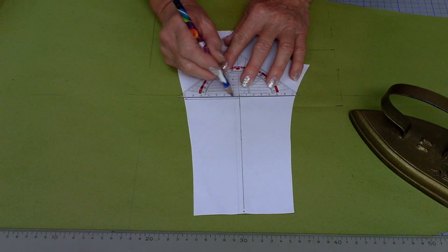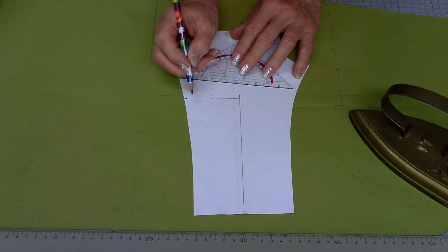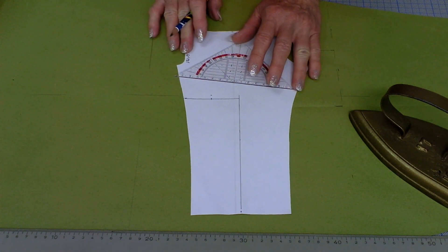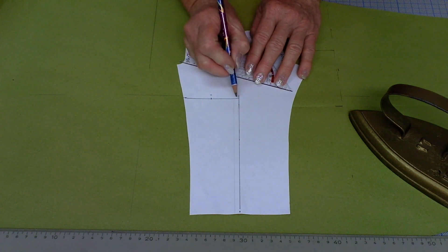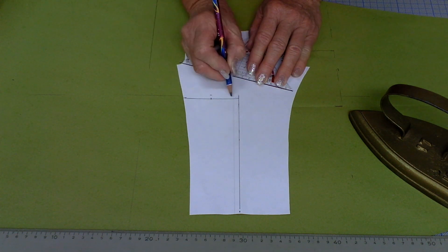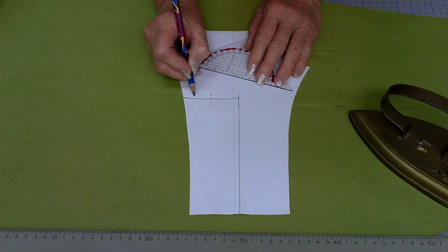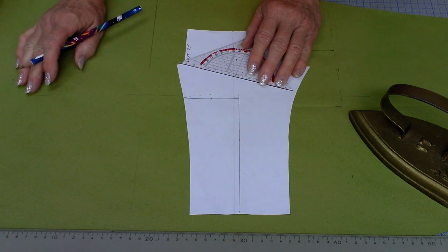But now exactly in the middle of this new part I will slightly, let's say two centimeters on your pattern, I will go upwards to get a slight bend into this cutout because I wouldn't like to have it just straight across, which of course you can also do.